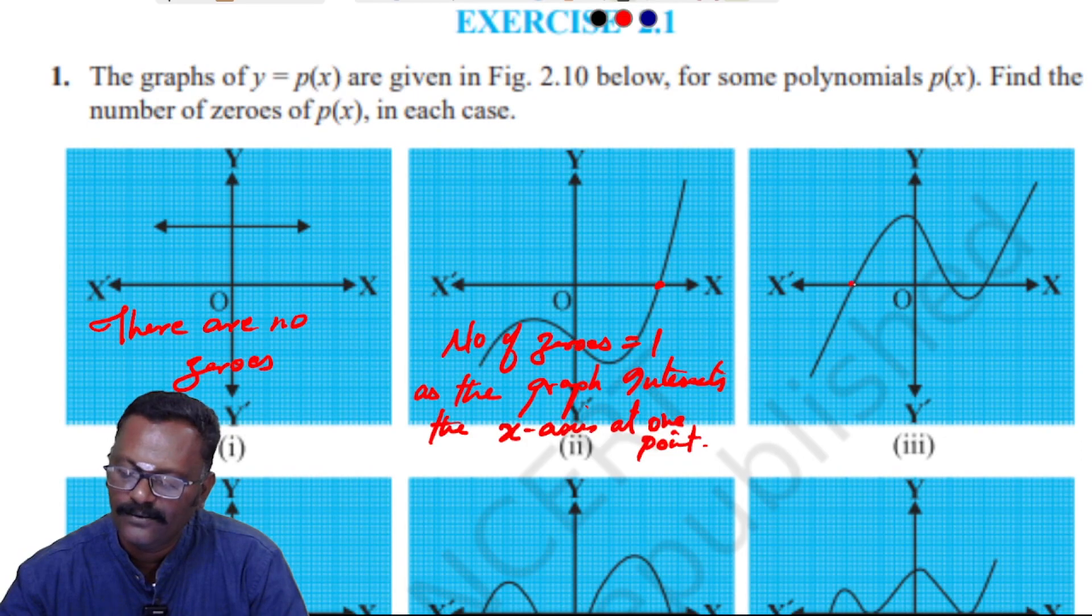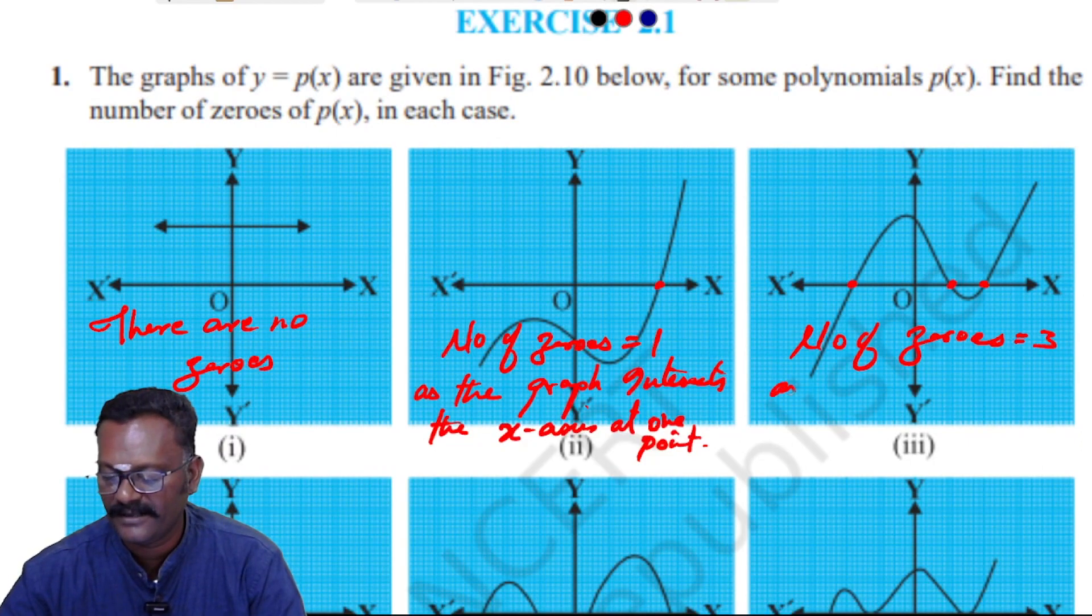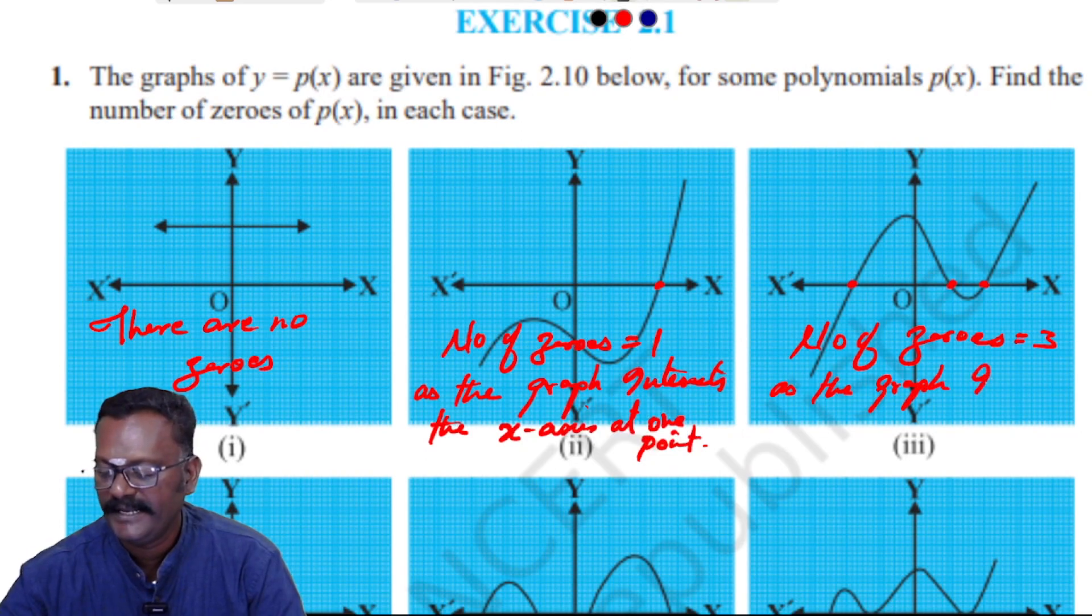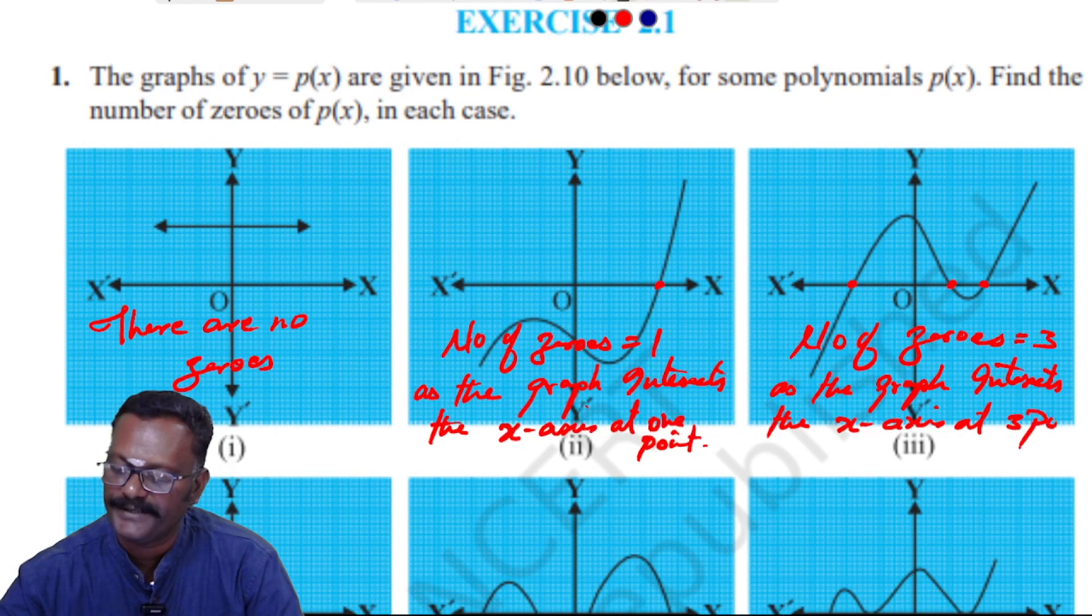Next, looking at the third graph. The number of zeros equal to three, as the graph intersects the x-axis at three points.